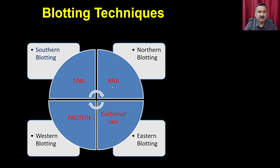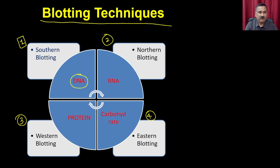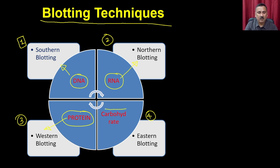As far as blotting techniques are concerned, they are categorized based on the target molecules. We have four different types: Southern blotting, Northern blotting, Western blotting, and Eastern blotting. In Southern blotting, you use DNA as the target molecule. If the target is RNA, it is called Northern blotting; if it is protein, it is called Western blotting; and if it is a carbohydrate, it is called Eastern blotting.